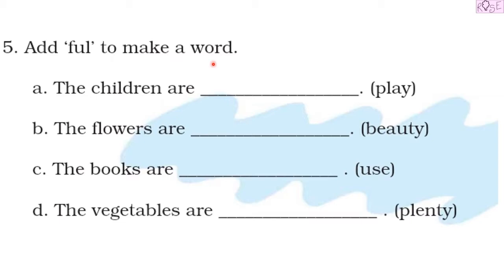Let us see what we have to do. Add F-U-L, 'ful', to make a word. In this exercise, there are some sentences with words given in brackets after the sentence ends. We have to add 'ful' to these words to make a new word and then write the word in the blanks.